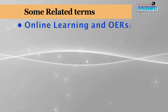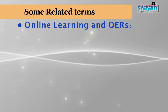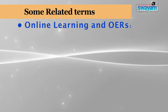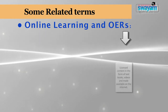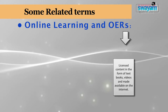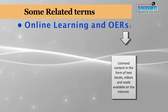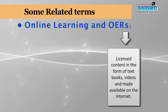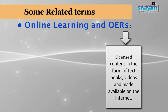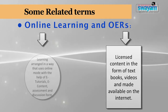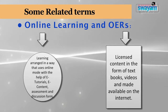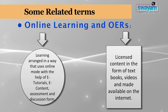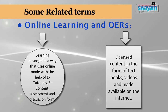Let us discuss some related terms. First, online learning and OERs are sometimes used simultaneously, but OERs are not the same as e-learning or online learning. Licensed content available on the internet — such as textbooks, videos, audios, and e-learning courses — may overlap with OERs, but that does not indicate that OERs are explicitly e-learning. In fact, many open educational resources shared in digital format are printable too.